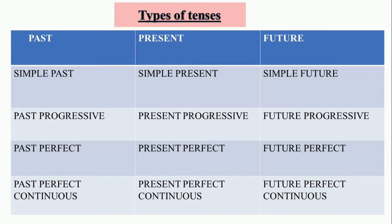In this way, the total number of tenses is twelve: simple present, simple past, simple future, present progressive, past progressive, future progressive, present perfect, past perfect, future perfect, present perfect continuous, past perfect continuous, and future perfect continuous. Thus, the tense of a verb does not show the time of an action or event alone — it shows the state of that action also.